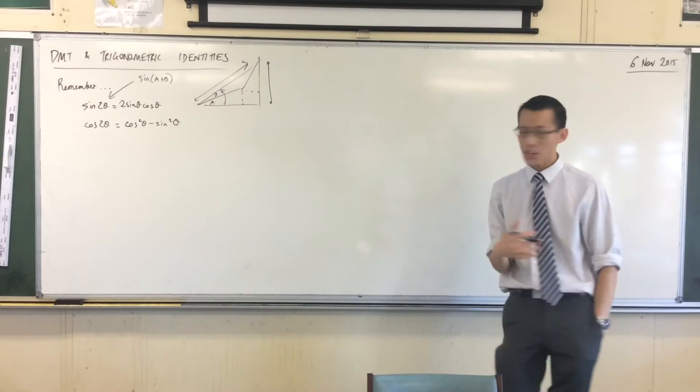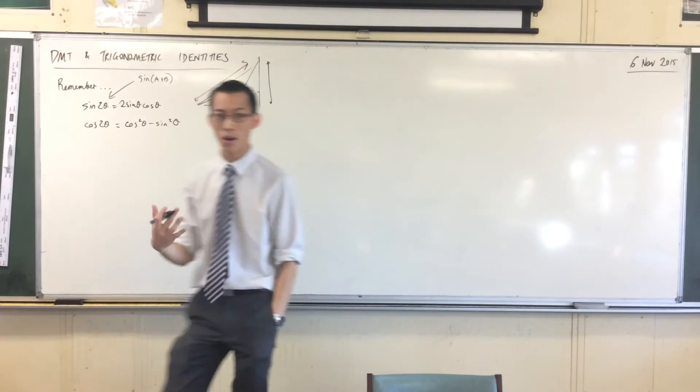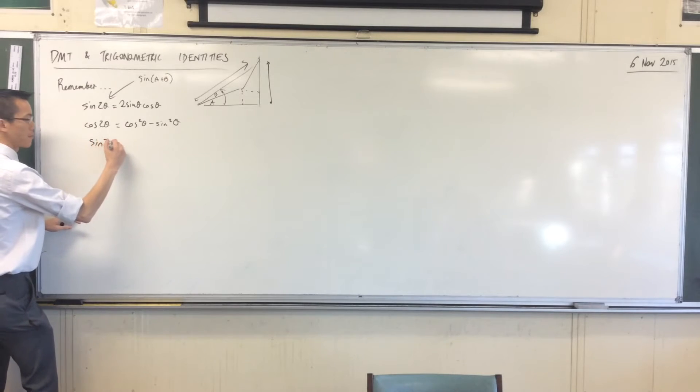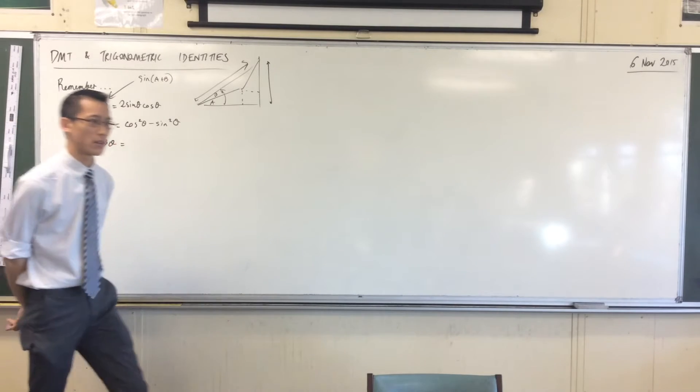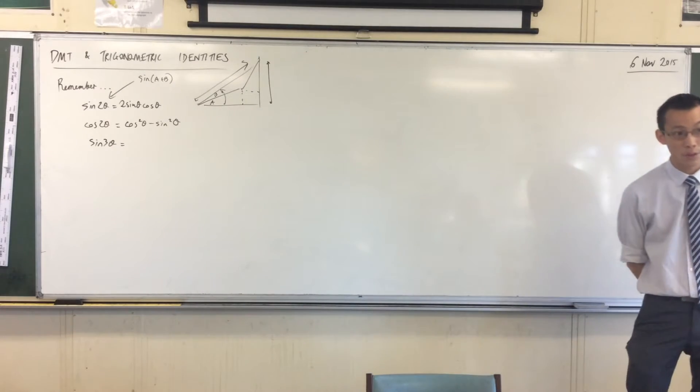Now, once upon a time, going further than this was in the syllabus, was mandated, you needed to know more identities than just this. For instance, you needed to know this, and the corresponding one for cosine, right? So, aptly named, these are the triple angle formulas.